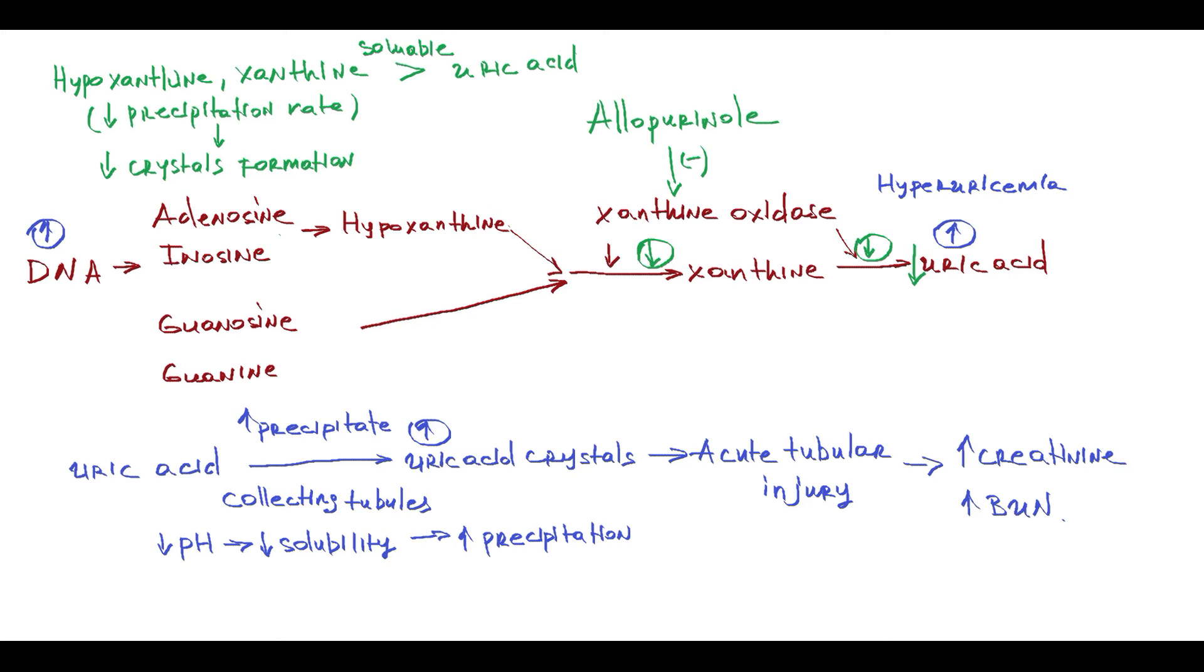But the problem with allopurinol is that it does not increase the rate of breakdown of uric acid that has already been released to the bloodstream, so therapeutic effect is delayed by 1 to 3 days. Rasburicase is a recombinant form of enzyme urate oxidase, which is absent in human organisms. Urate oxidase can convert uric acid to allantoin, which is a substantially more soluble substance than uric acid. It's extremely effective because it acts immediately on already formed urate, and with IV infusion, rasburicase can reduce plasma uric acid level within 4 hours.